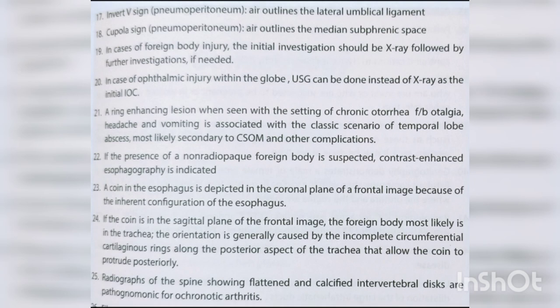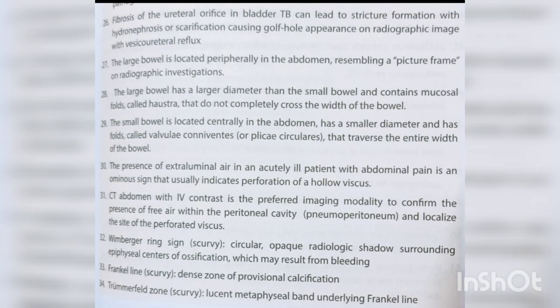Radiographs of the spine showing flattened and calcified intervertebral discs are pathognomonic for ochronotic arthritis. Fibrosis of the ureteral orifice in bladder TB can lead to stricture formation with hydronephrosis, or scarification causing golf ball appearance on radiographic imaging with vesicoureteral reflux. The large bowel is located peripherally in the abdomen, resembling a picture frame on radiographic investigations.